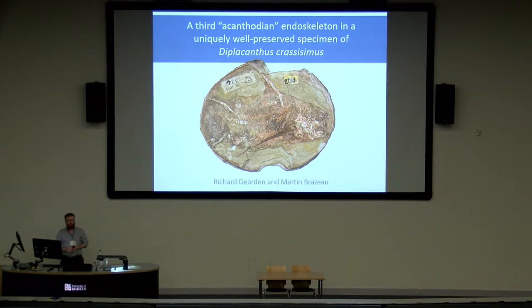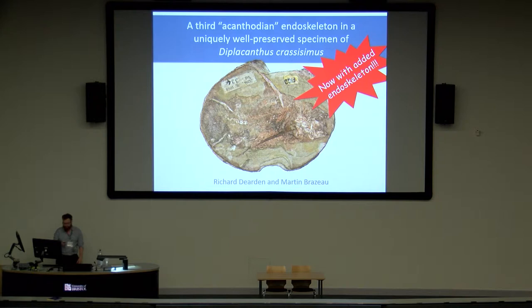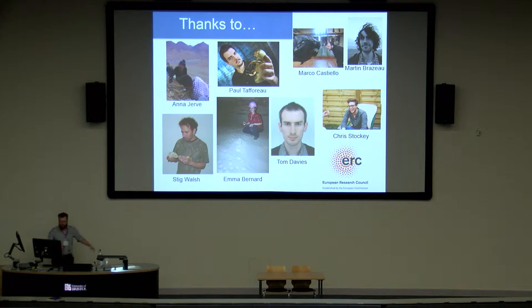Hello everybody. I'm having a bit of trouble with my voice this morning, so my delivery might be a bit more sultry than is strictly speaking appropriate for fossil fish, but please bear with. This is a talk about an animal called Diplocanthus chrysissimus, which is an acanthodian from Scotland, but I made it slightly more general than the abstract, so it now has bonus added endoskeleton. Thanks to various people who've helped me from scanning to museum collections.